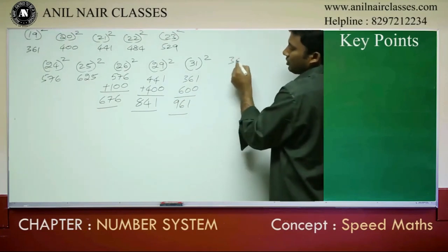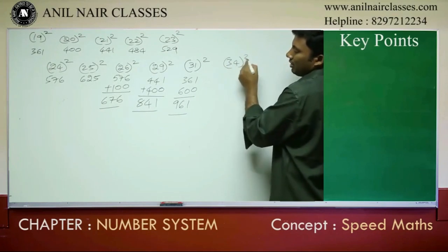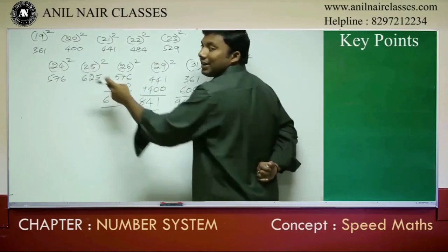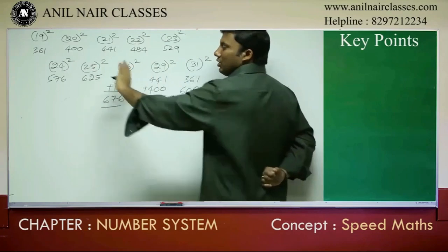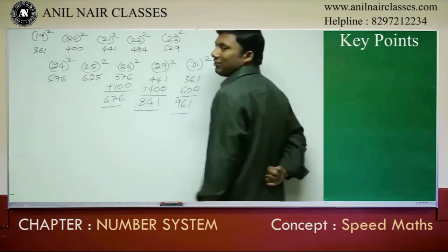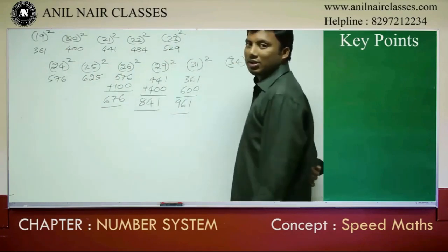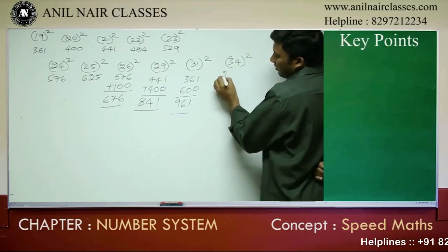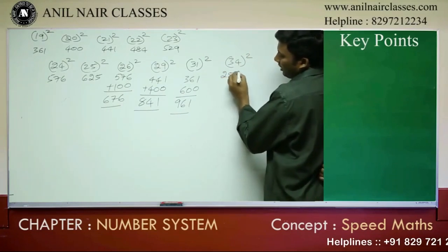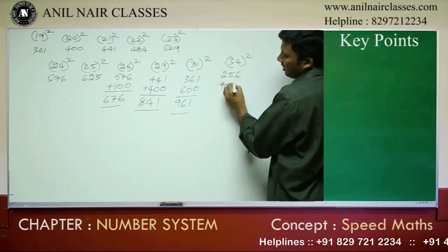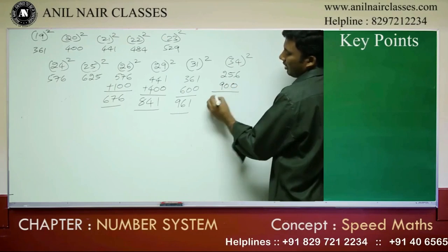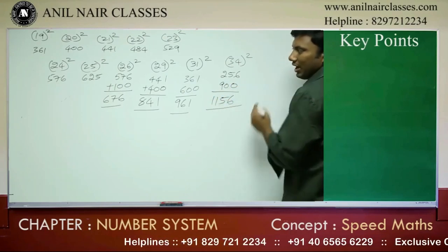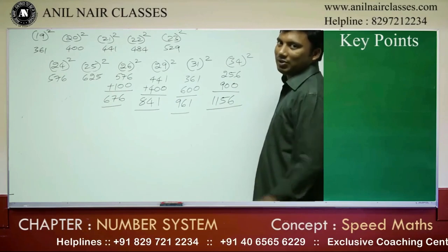Last example: 34 squared is how many units ahead of 25? 9 units. Go 9 units back of 25, which is 16. 16 squared is 256. Since it is 9 units, add 900. The answer is 1156. I hope this concept is very clear to you.